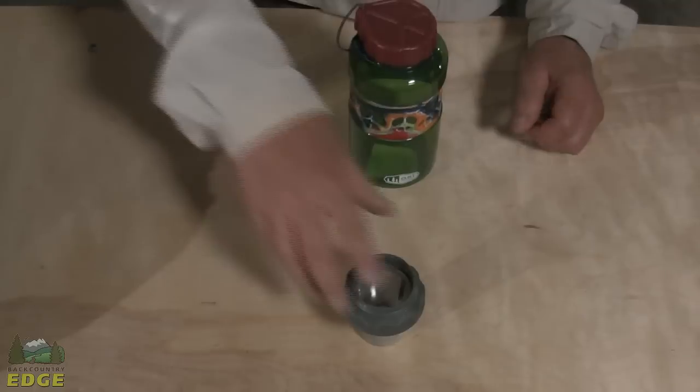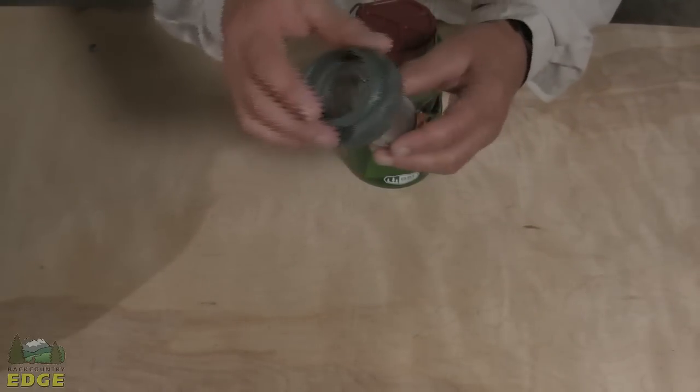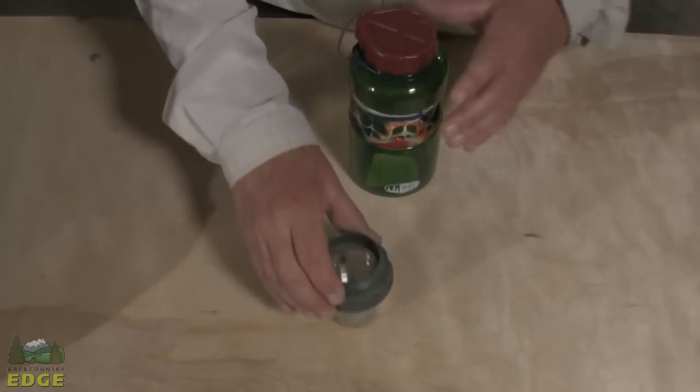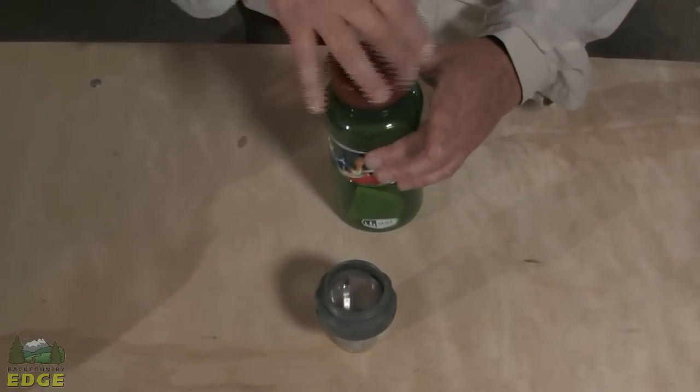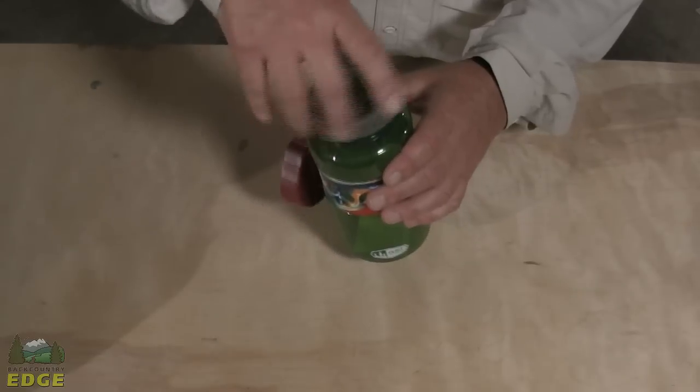I'll show you how this works. This is constructed of a very fine mesh stainless steel cone that screws into wide mouth bottles. I have the GSI duck jug here. I can screw this in.